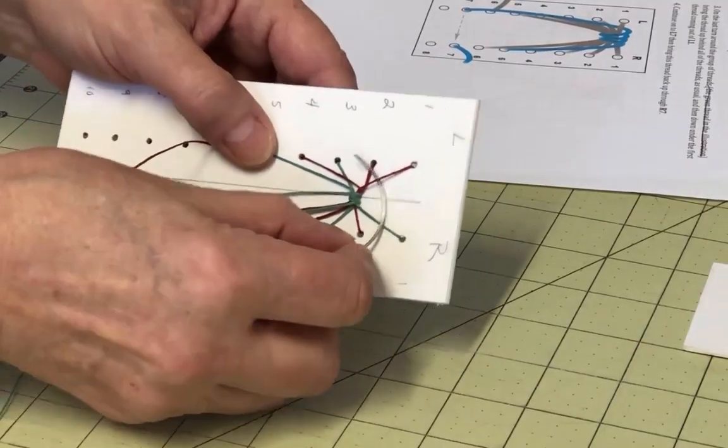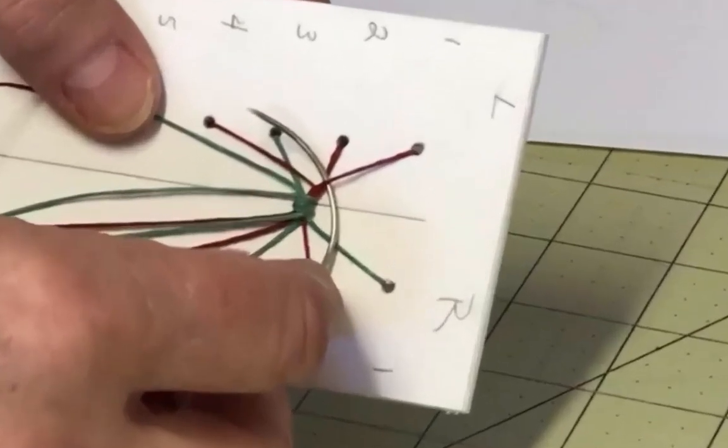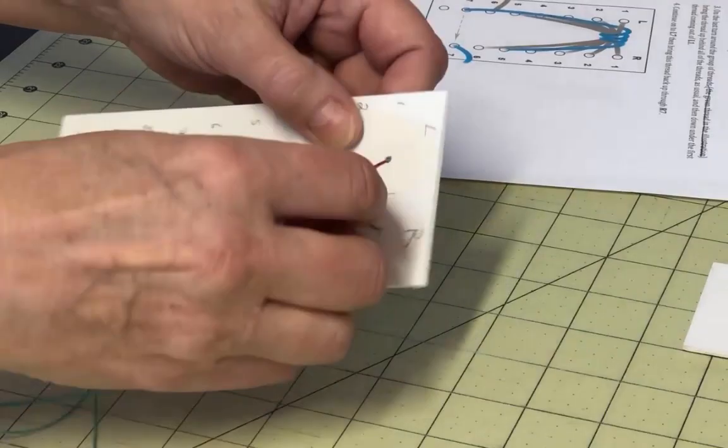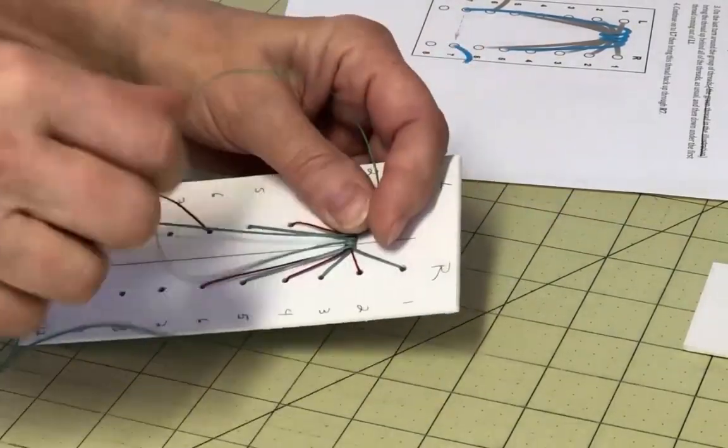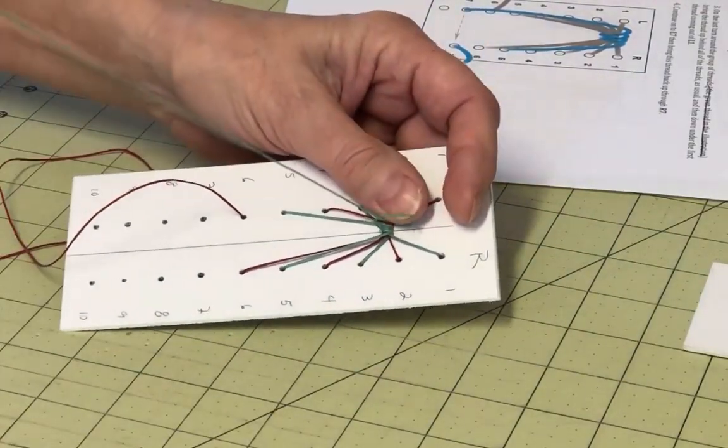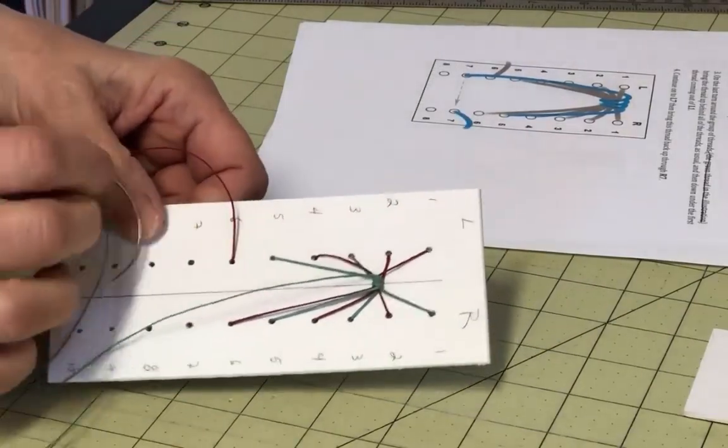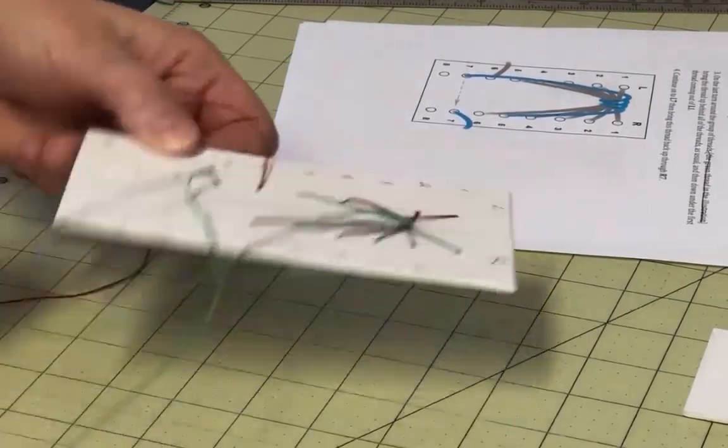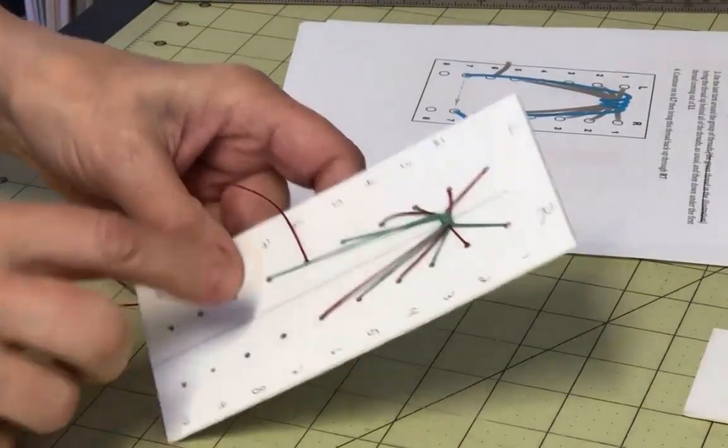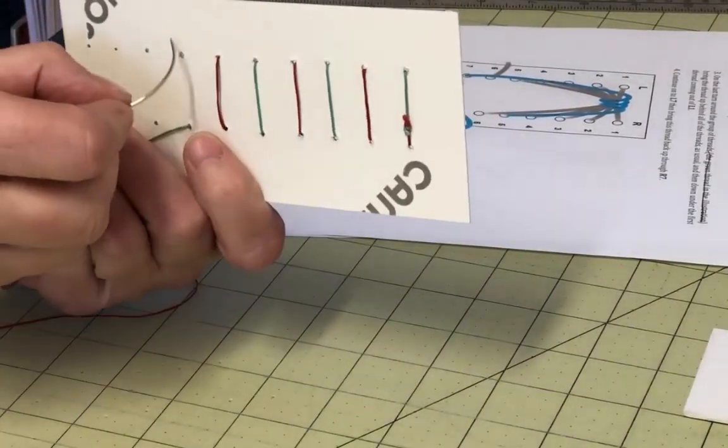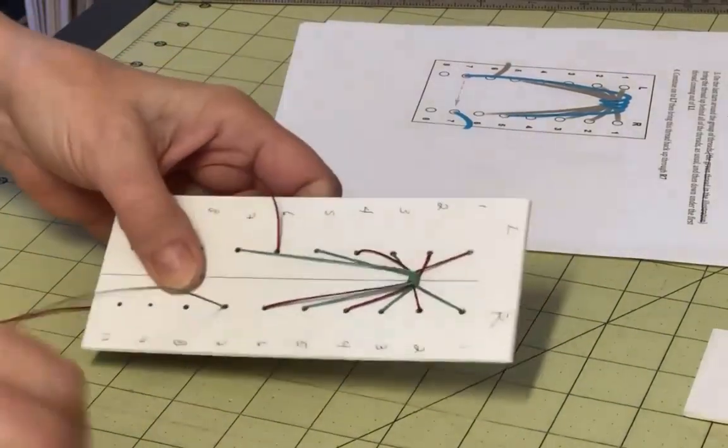On the last time around the group of threads, instead of bringing the needle out through the center of the group, just bring it under the first thread coming out of L1. Take the thread out through L7 and then bring it back up through R7. Now you're done with arguably the most awkward part of the caterpillar to construct, the head.